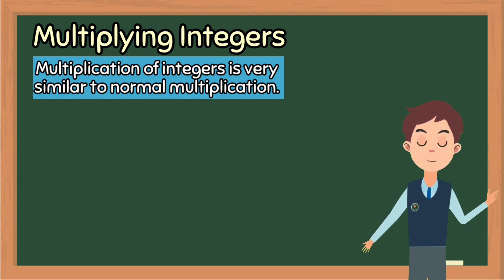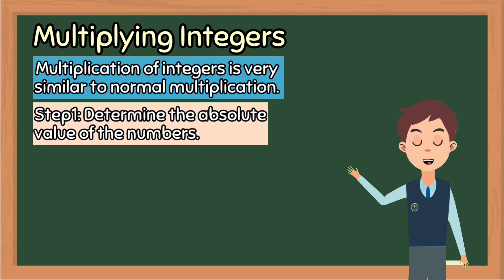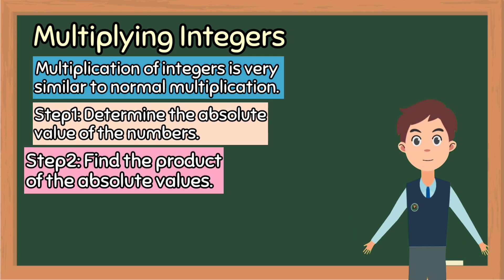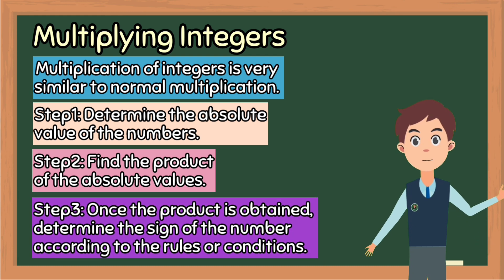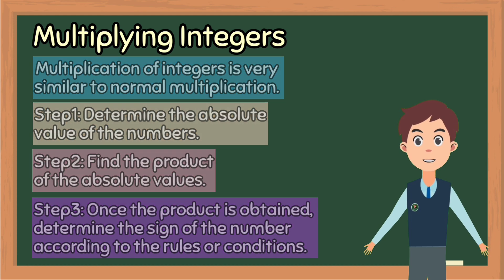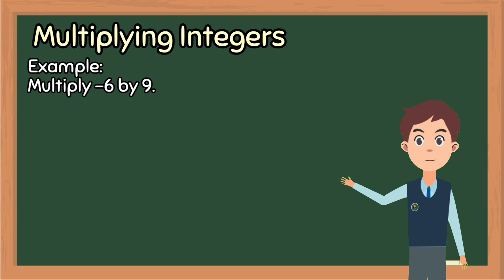Let us look at the steps for multiplying integers. Step 1: determine the absolute value of the numbers. Step 2: find the product of the absolute values. Step 3: once the product is obtained, determine the sign of the number according to the rules or conditions. Let us look at an example to understand the steps better.